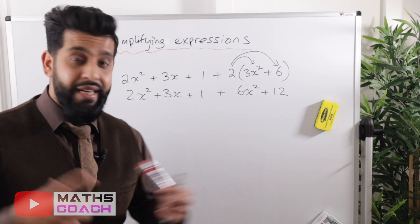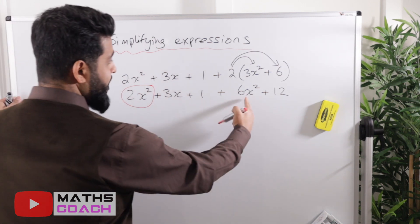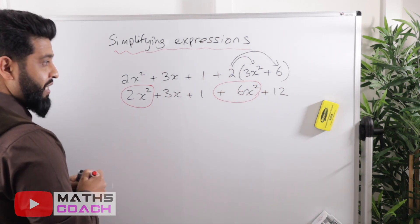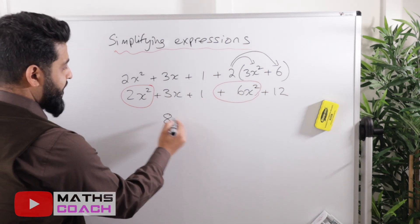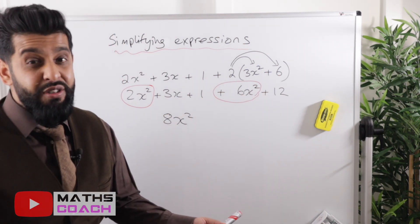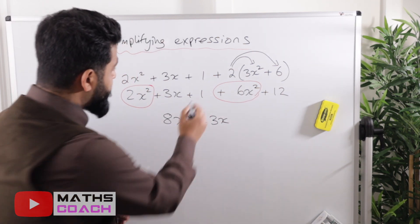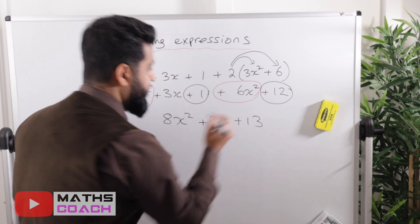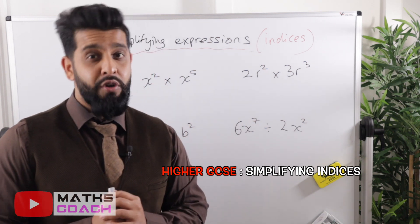Now highlighting like terms: we have 2x² and 6x² — making sure to include the plus sign with the 6x². Collecting: 2x² plus 6x² gives 8x². Then 3x is on its own, so we just write plus 3x. For the numbers: plus 1 plus 12 gives plus 13. The fully simplified answer is 8x² plus 3x plus 13.